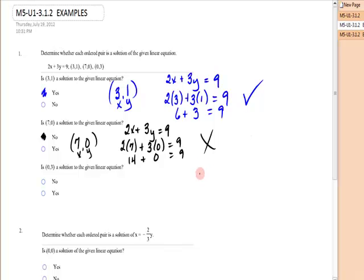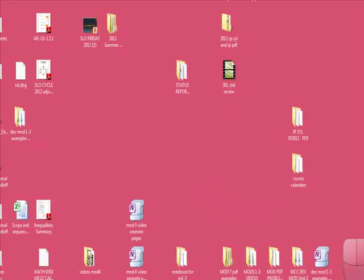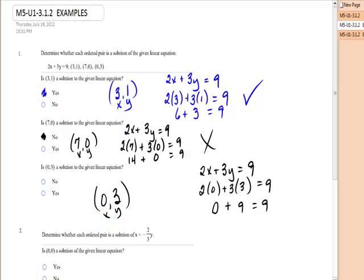The last one, I have 2x plus 3y equals 9. Is (0,3) a solution? There's x, there's y. Is 2 times 0 plus 3 times 3 equal to 9? Well, 2 times 0 is 0. 3 times 3 is 9. Is 0 plus 9 equal to 9? The answer is yes.